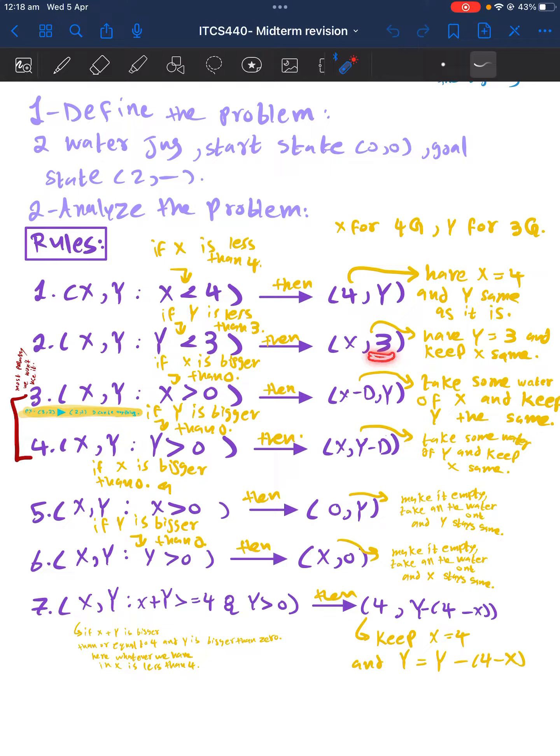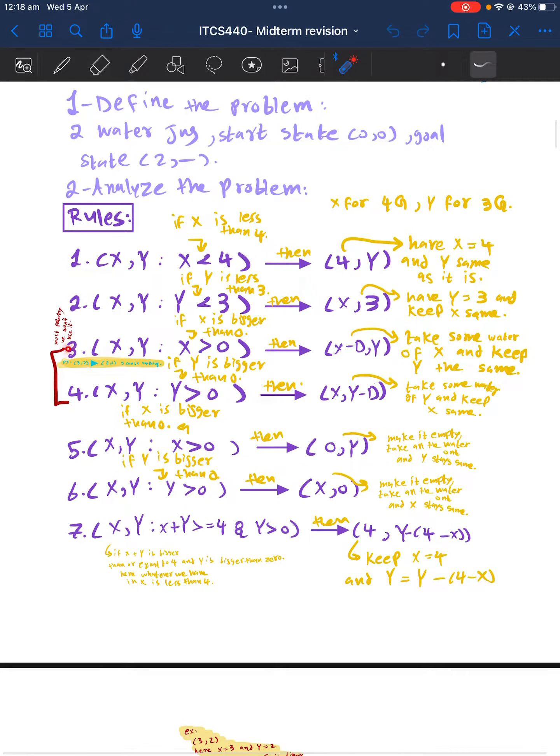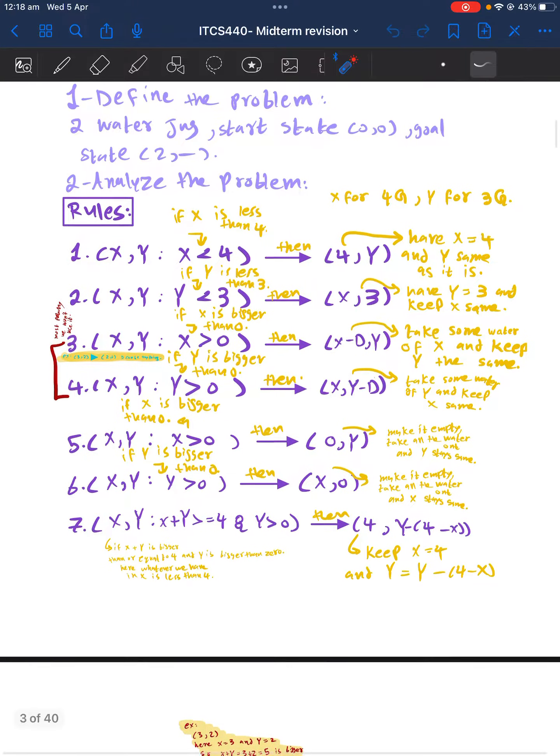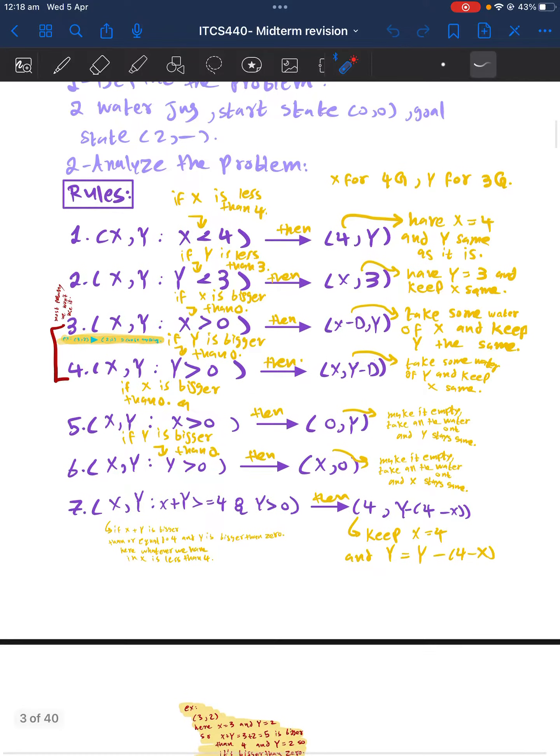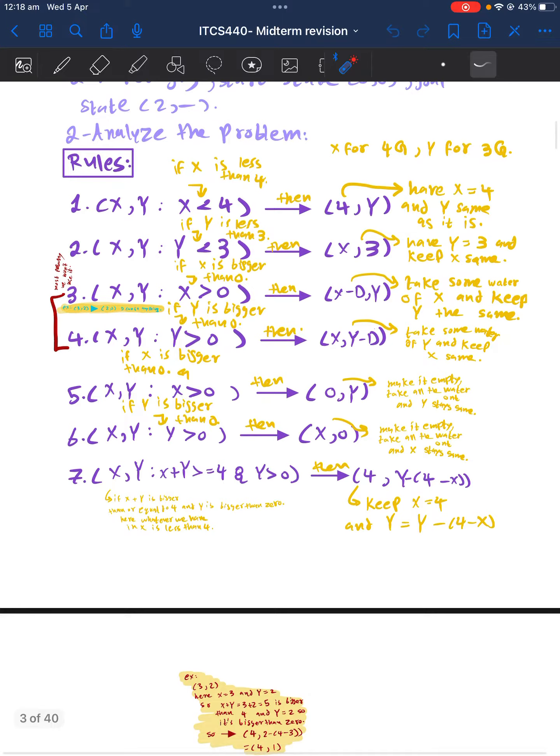These rules are mostly never used. It says that if X has more than zero, so if it's not empty, we will subtract X with a number which is called here D. So we don't know this number because we don't have a scale, so it's mostly never used. We will do the same thing with the Y.